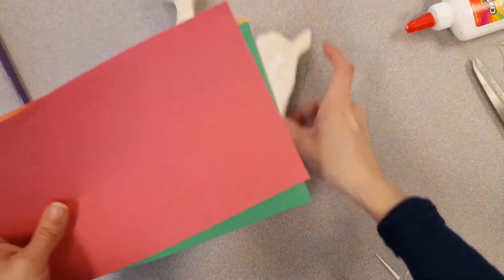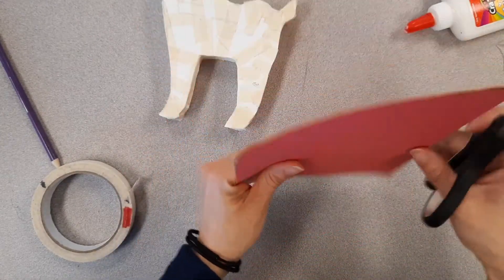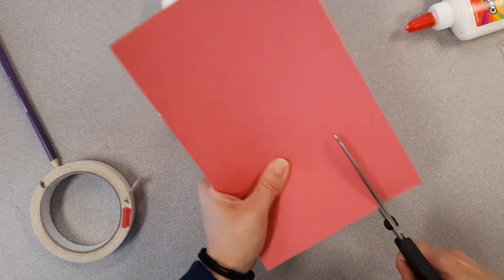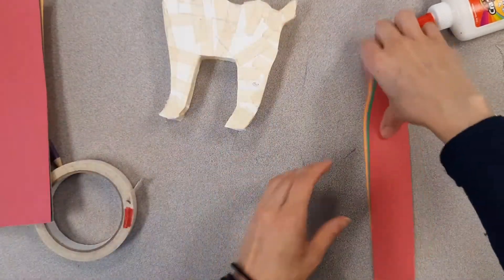The next thing you'll do is you'll take your construction paper. And I encourage you to cut these lengthwise. If you have a paper cutter, it's very easy. But cut them kind of long, the long ways like this.